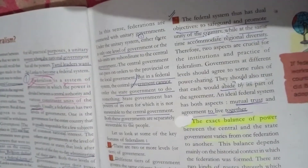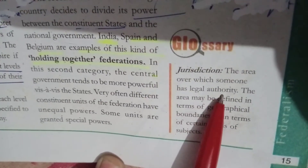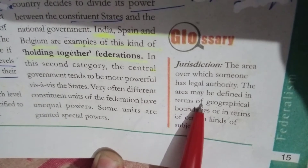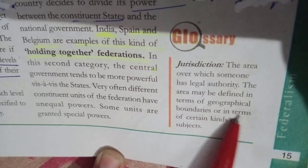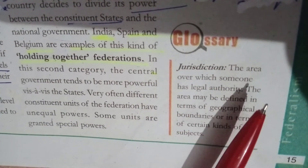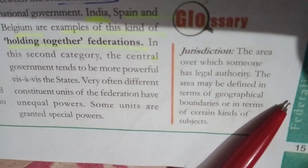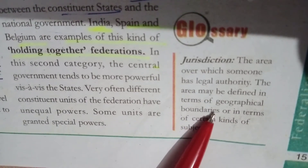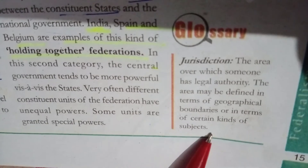Another important key definition: Jurisdiction. Jurisdiction means the area over which someone has legal authority. The area may be defined in terms of geographical boundaries or in terms of certain kinds of subjects. So jurisdiction refers to a particular area where one has legal authority, defined either by geographical boundaries or by the nature of the subjects involved.